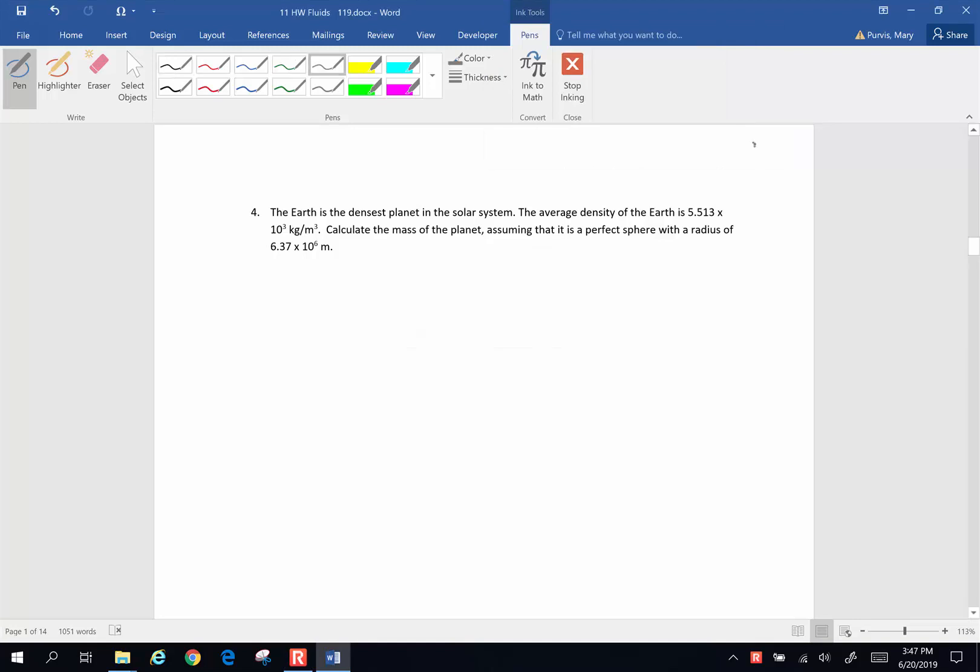Hi folks, we're going to continue with some Chapter 11 problems. The Earth is the densest planet in the solar system. The average density of the Earth is 5.513 times 10 to the third kilograms per cubic meter. Calculate the mass of planet Earth assuming that it is a perfect sphere, it's not but we're going to pretend, with a radius of 6.37 times 10 to the sixth meters.